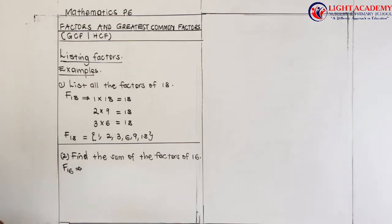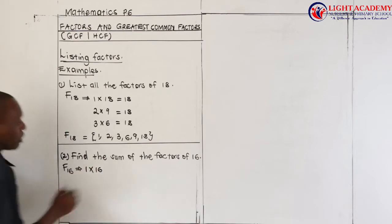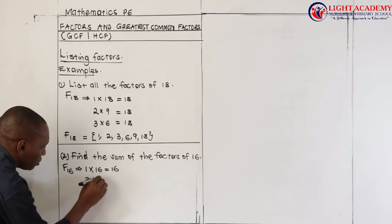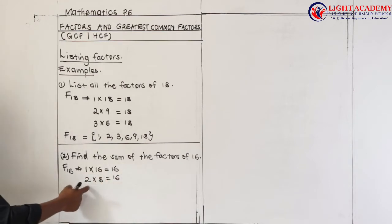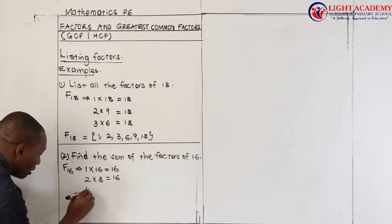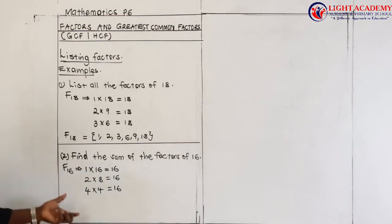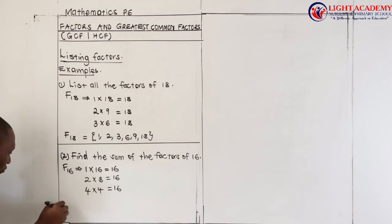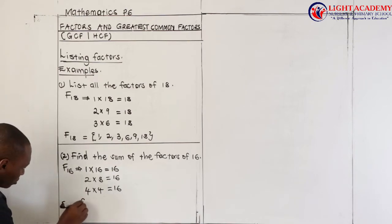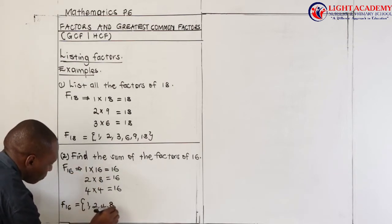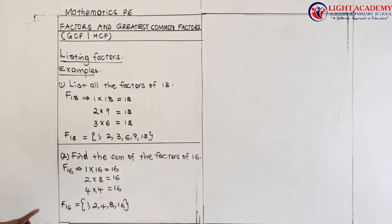We list the pairs of numbers such that when you multiply them, their answer is 16. The first pair is 1 multiplied by 16 — the answer is 16. The next pair, using our multiplication table, is 2 multiplied by 8, which gives 16, meaning 2 and 8 are factors of 16. Then the other pair is 4 multiplied by 4, whose answer is also 16. So these are the only pairs whose product is 16. Therefore, the factors of 16 are: 1, 2, 4, 8, and 16.